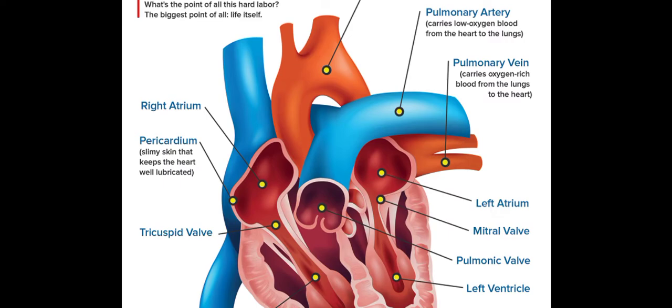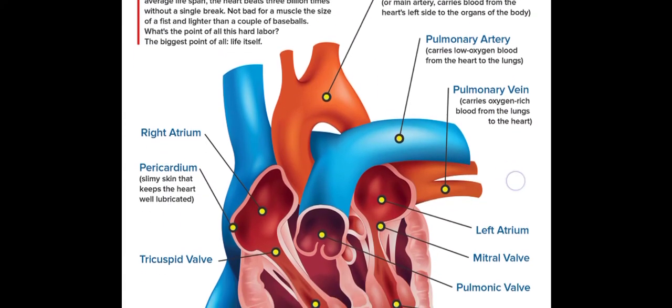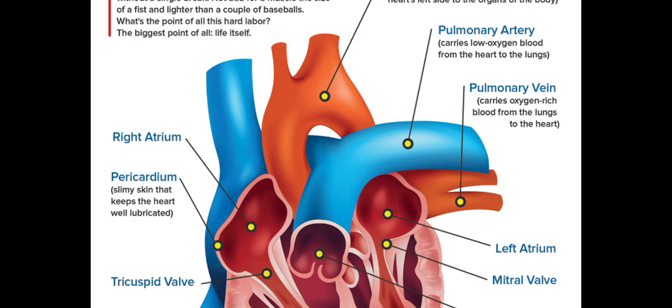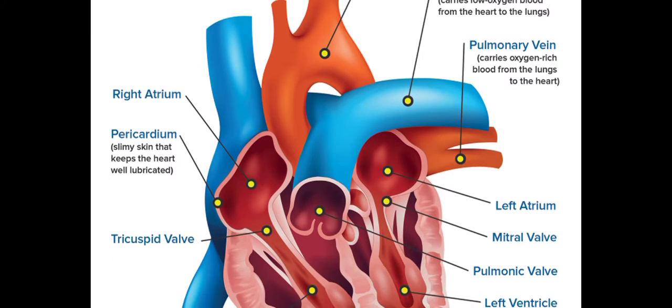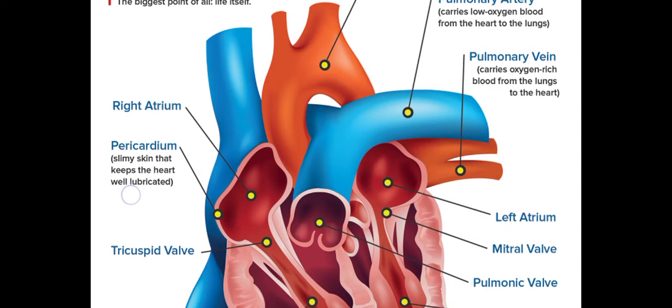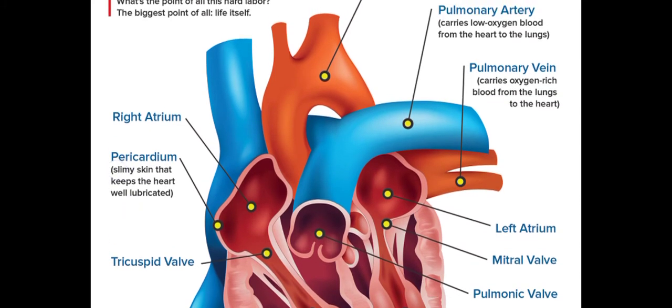Those are scientific terms you need to be familiar with. We also have the right atrium, and then we have the pericardium — science is full of pronunciation challenges! The pericardium is a thin skin that keeps the heart well lubricated, ensuring that blood flow passes without any friction or corrosion.